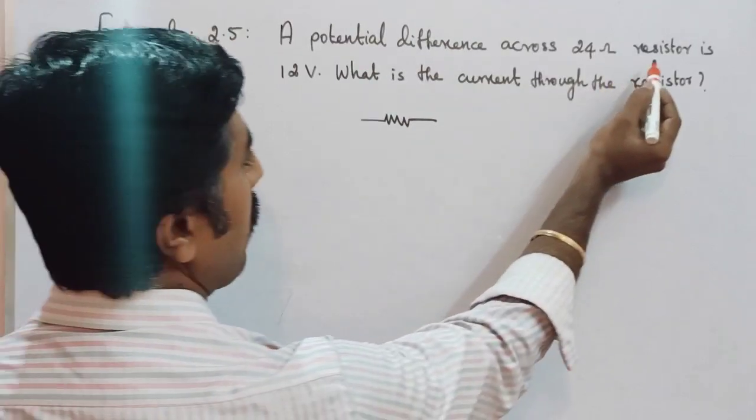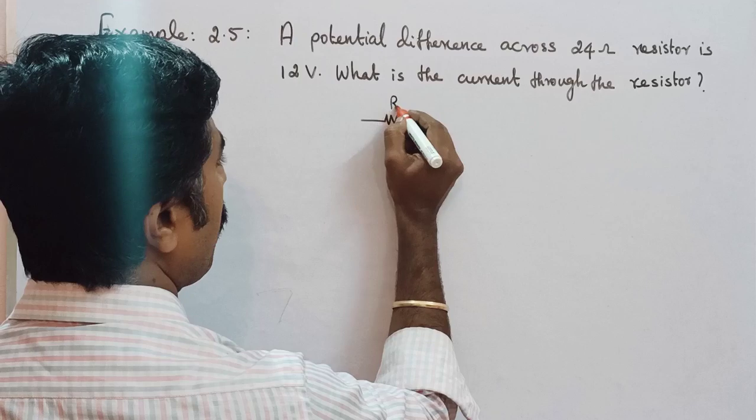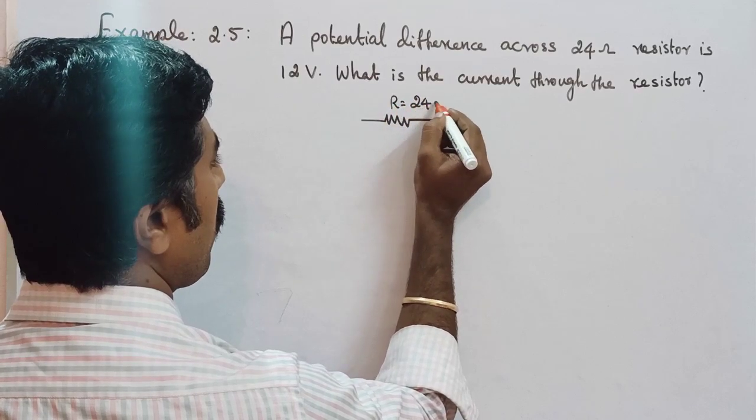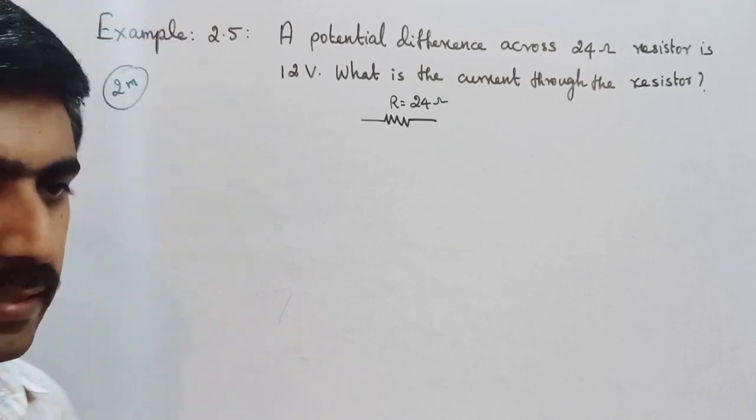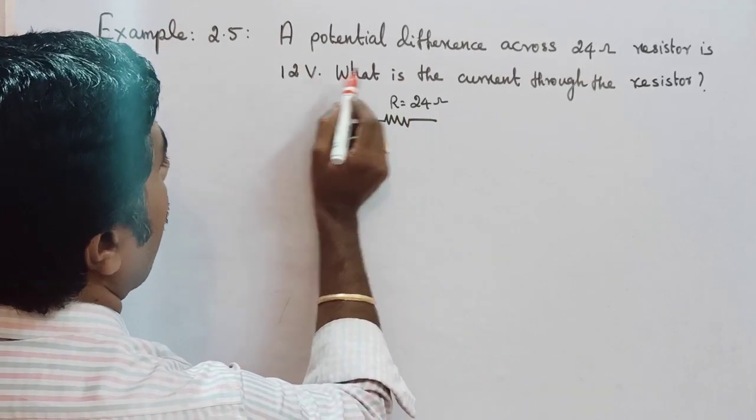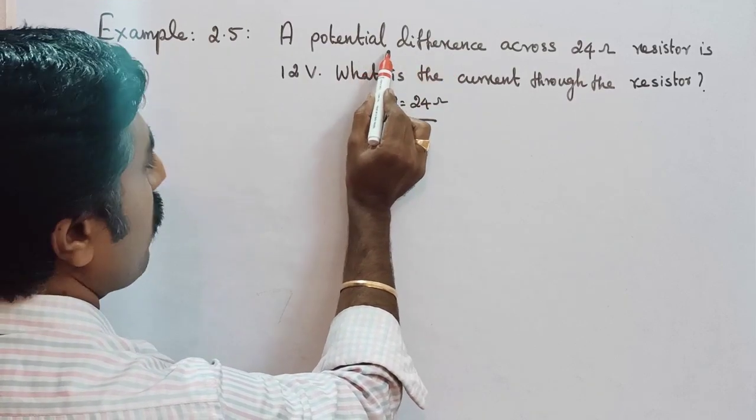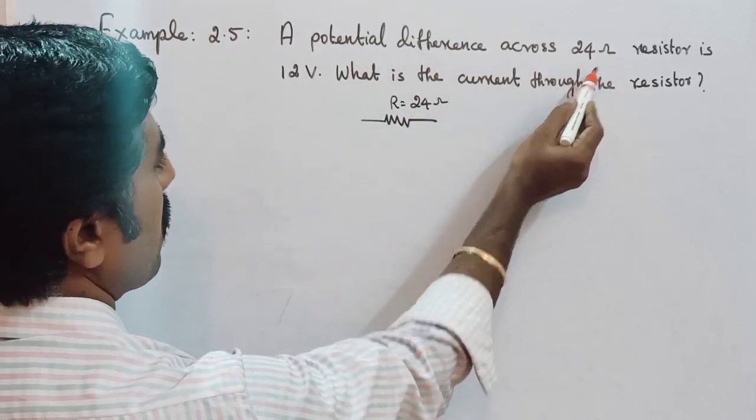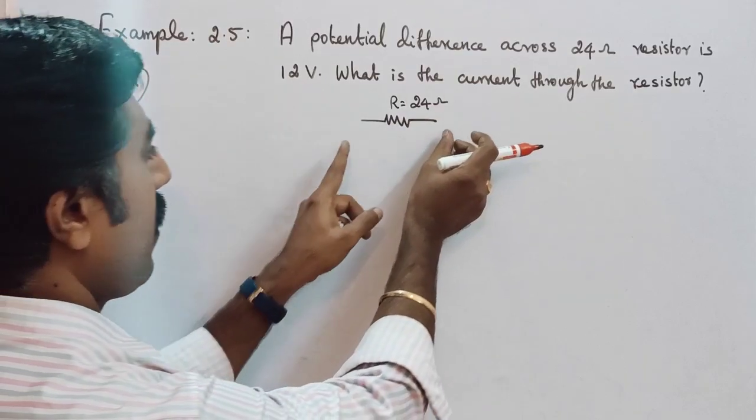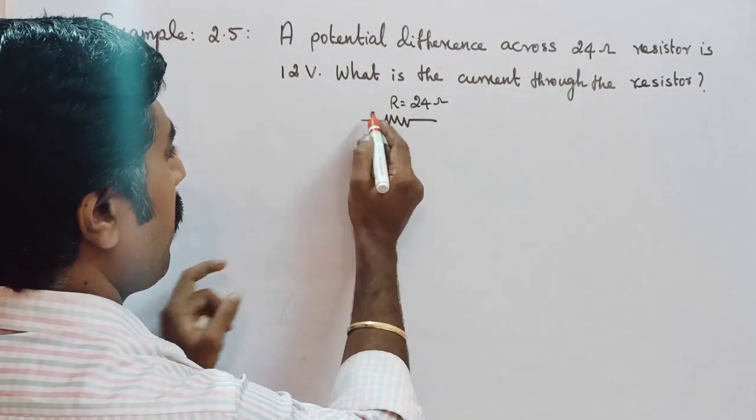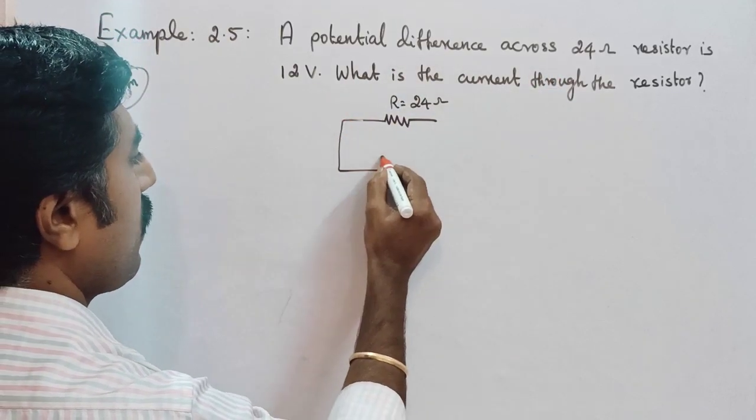Yes, so the resistance of the resistor is 24 ohm. So R is equal to 24 ohm, because ohm is the unit of resistance. So R equal to 24 ohm. We need to apply the potential difference across 24 ohm resistor is 12 volt. That is the resistor here, 2 ends. We need to get the potential difference 12 volt, so here we need to connect one battery.